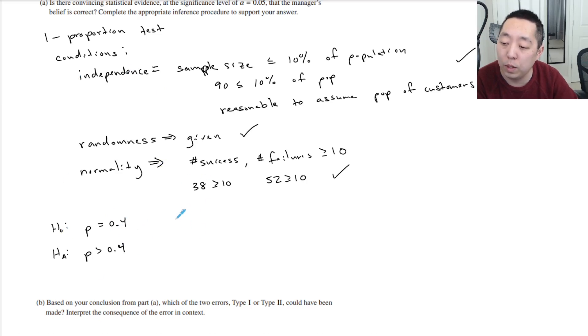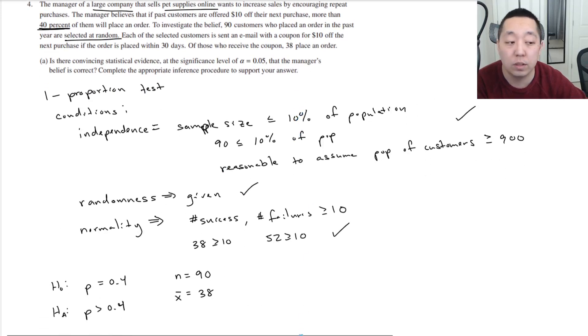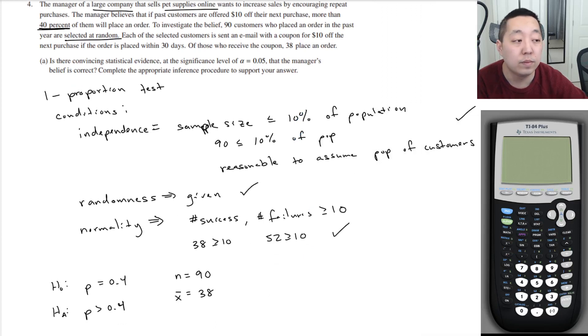Now we're going to do a one prop z test. I usually try to write all the things. We have a sample size of 90 and the number of successes is 38. 38 people placed the order within 30 days. And so let us pull up the calculator here. And we're going to do stat tests, one prop z test. Note that we always do one prop z tests, or it's always a z test for proportions because it is always a normal approximation.